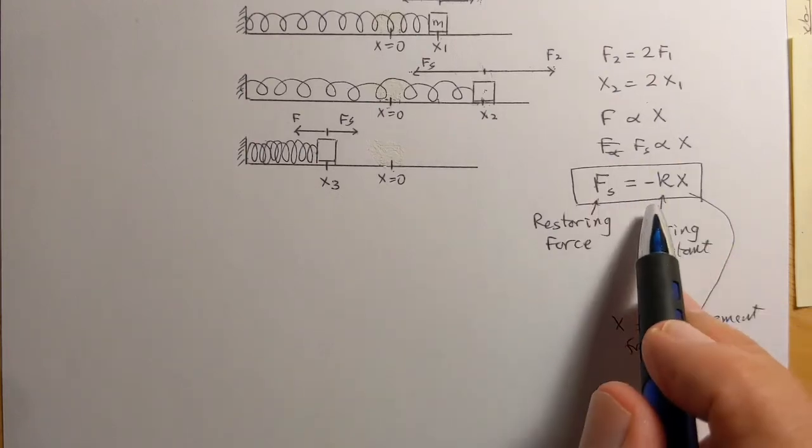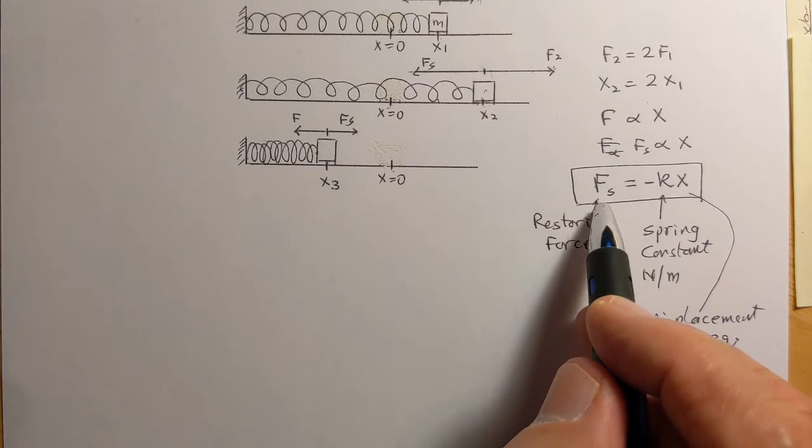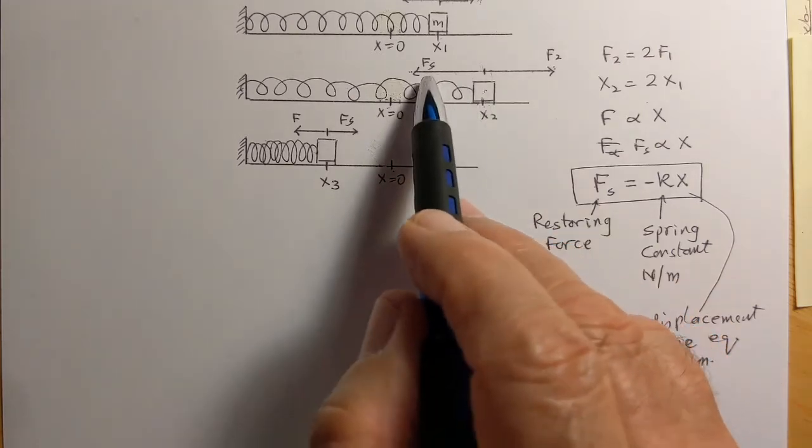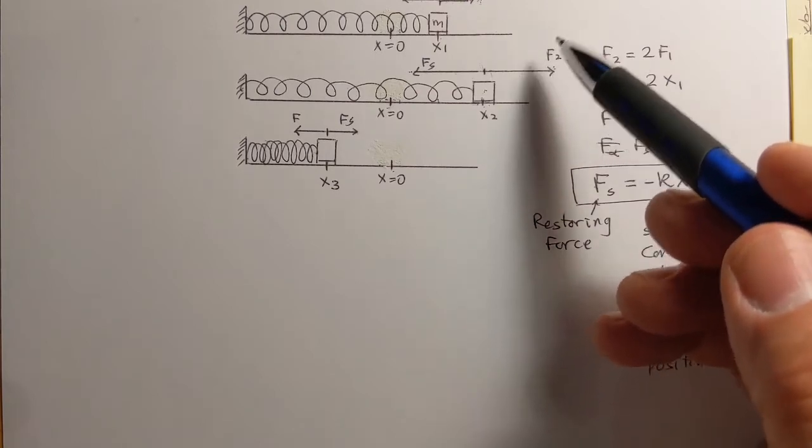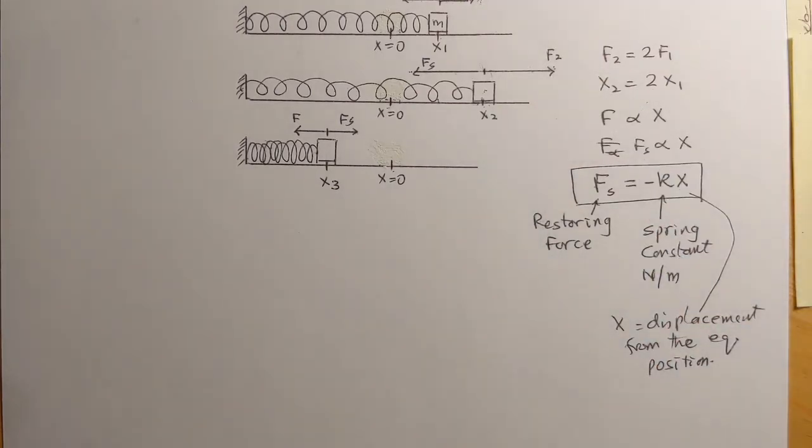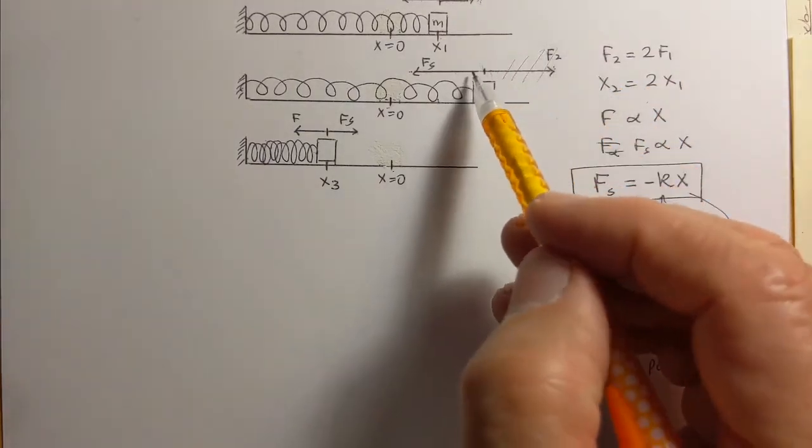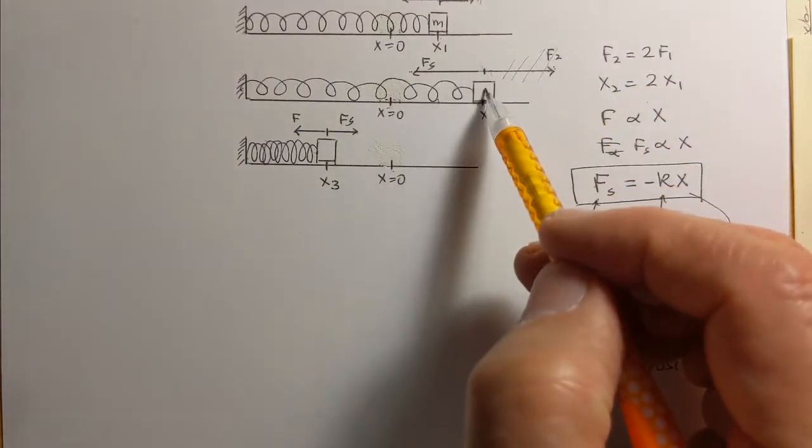So now we have Hooke's law, which is the force with which the spring is pulling the mass in. Now if we do not have this force anymore, we bring the mass up